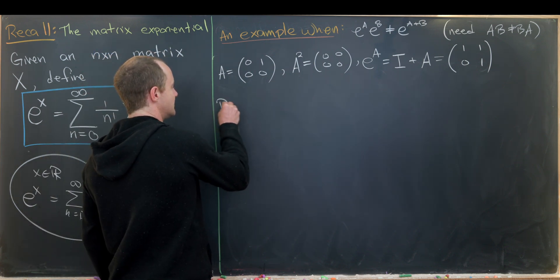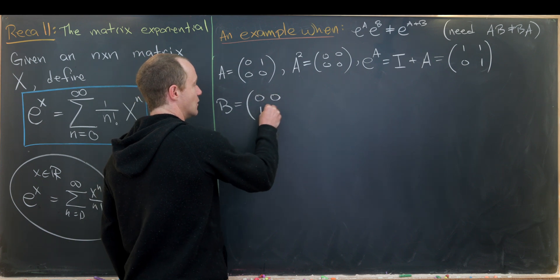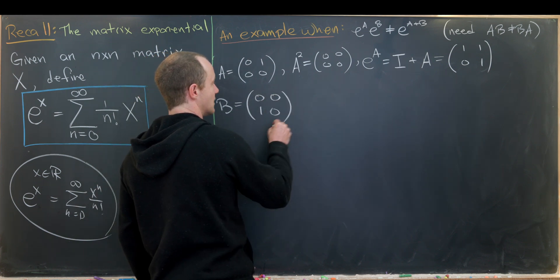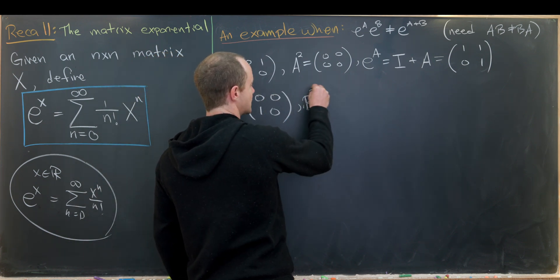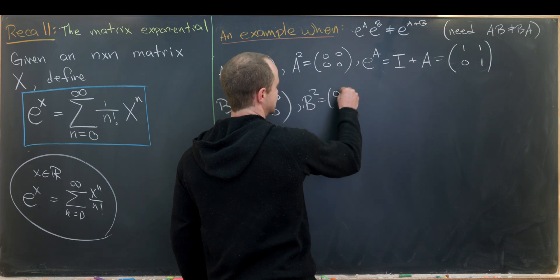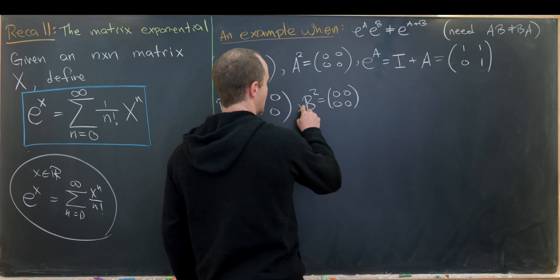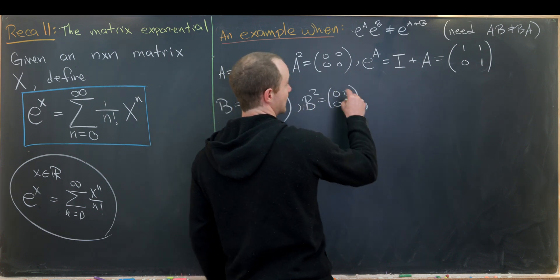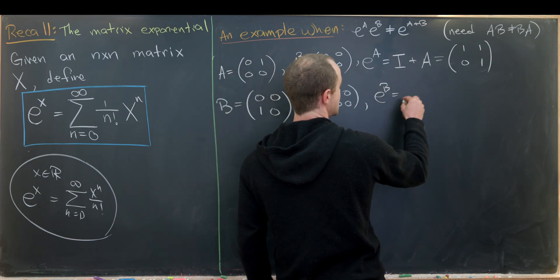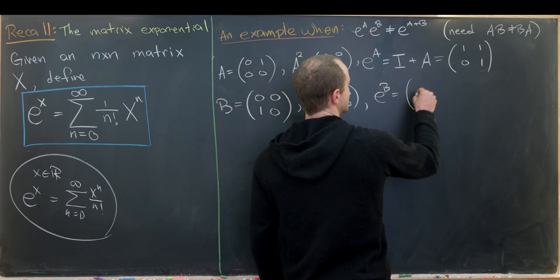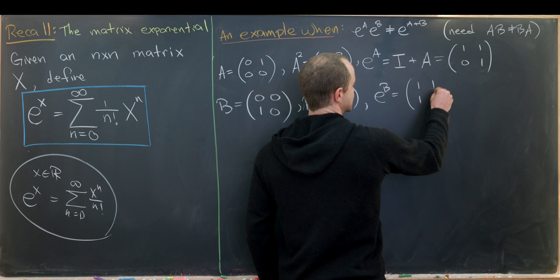Similarly, let B be the matrix [0,0; 1,0]. Notice that B squared is also equal to the zero matrix, and via a very similar calculation we get e to the B is equal to [1,0; 1,1].